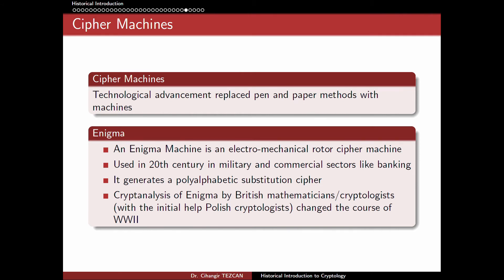Before computers, we had machines, and the most famous example is the Enigma. An Enigma machine is an electromechanical rotor cipher machine used in the 20th century in military and commercial sectors like banking. People think it was just a cipher machine used by Germans in the Second World War, but it was actually used in banking before the war started. It generates a polyalphabetic substitution cipher.